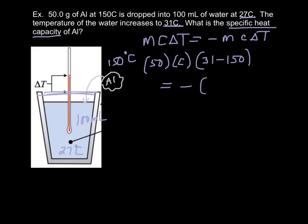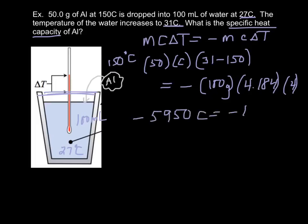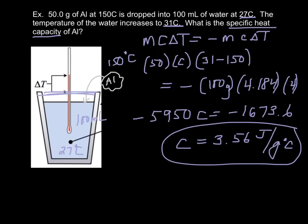The mass of the water, well, 100 milliliters is the same as 100 grams for water. Let's go ahead and do this one in joules. So, the specific heat capacity of water is 4.184. And the change in temperature of the water is 31 minus 27, or 4. So, if you do out your math here, you're going to get negative 5950 times C is negative 1673.6. The specific heat capacity is going to come out to be 3.56 joules per gram degrees Celsius. And that's how you do a calorimetry problem when you're just kind of throwing a metal into water and there's no reaction taking place. The metal loses heat, and the water gains heat.